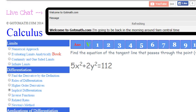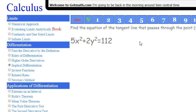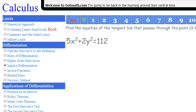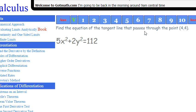Okay, welcome to GoToMath.com. We're going to do some calculus, implicit differentiation. We need to read the whole thing. Find the equation of the tangent line that passes through the point (4,4). That point can actually be on this curve here. 5x² + 2y² = 112. So we've got a few steps to take to do that.